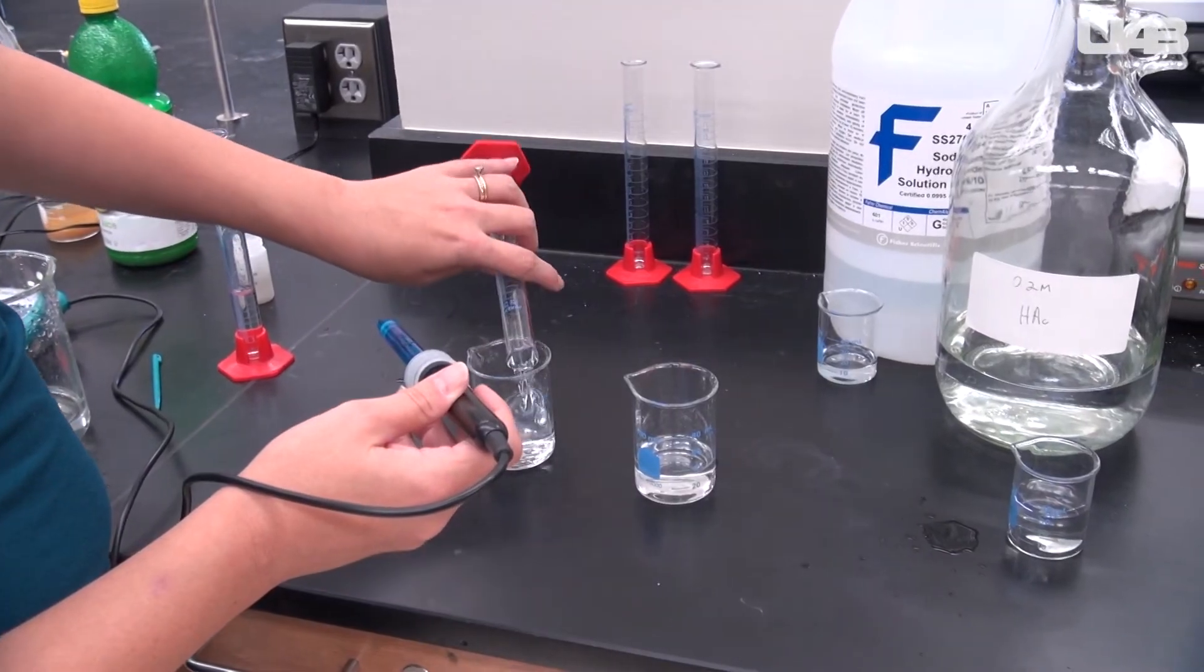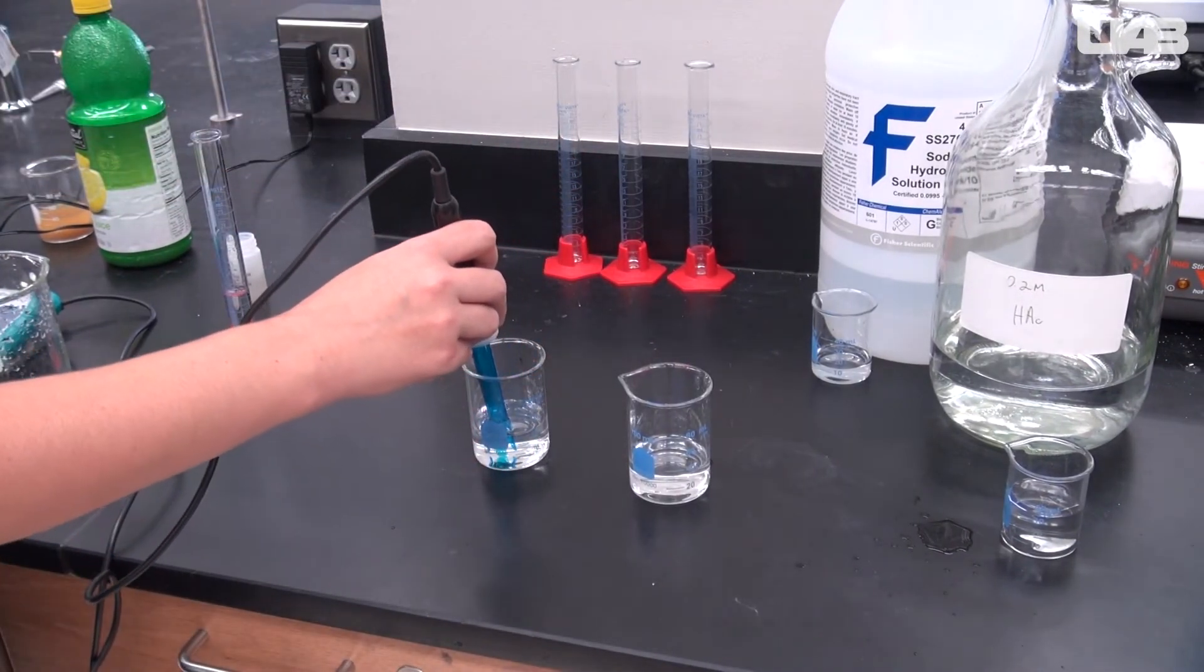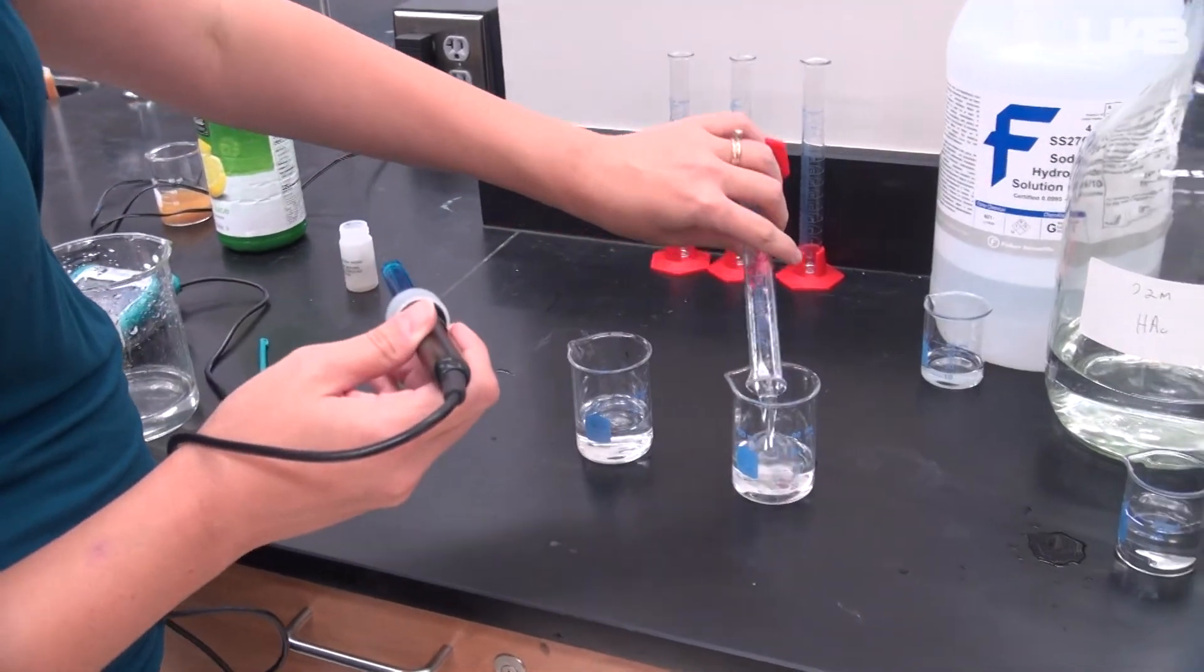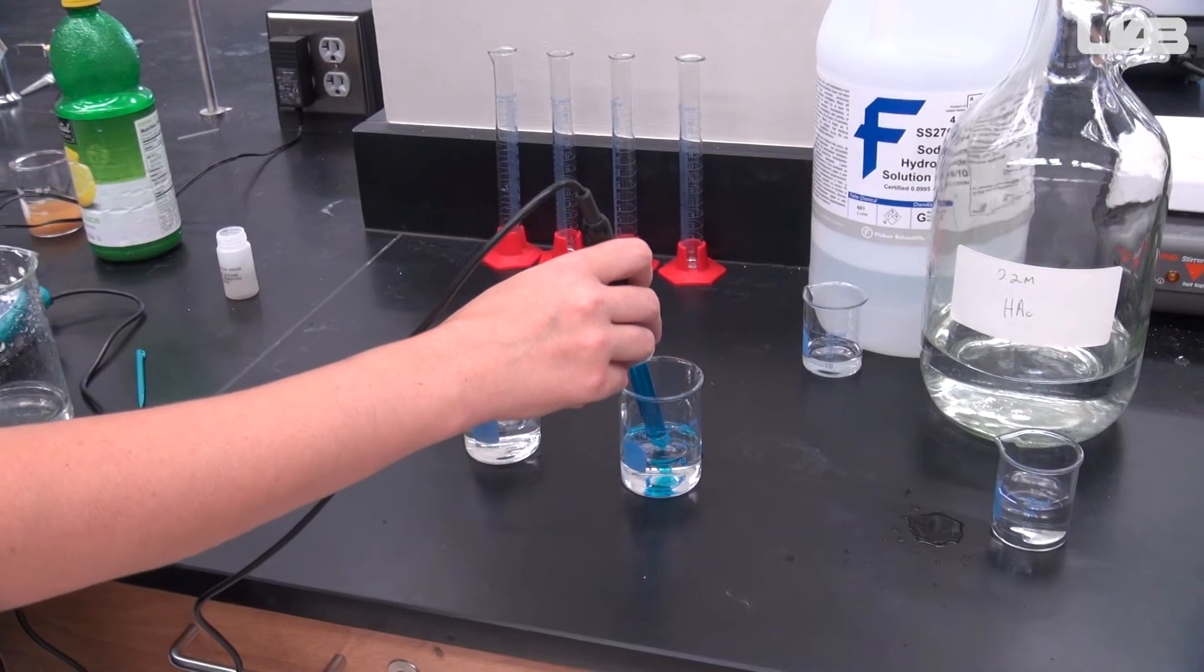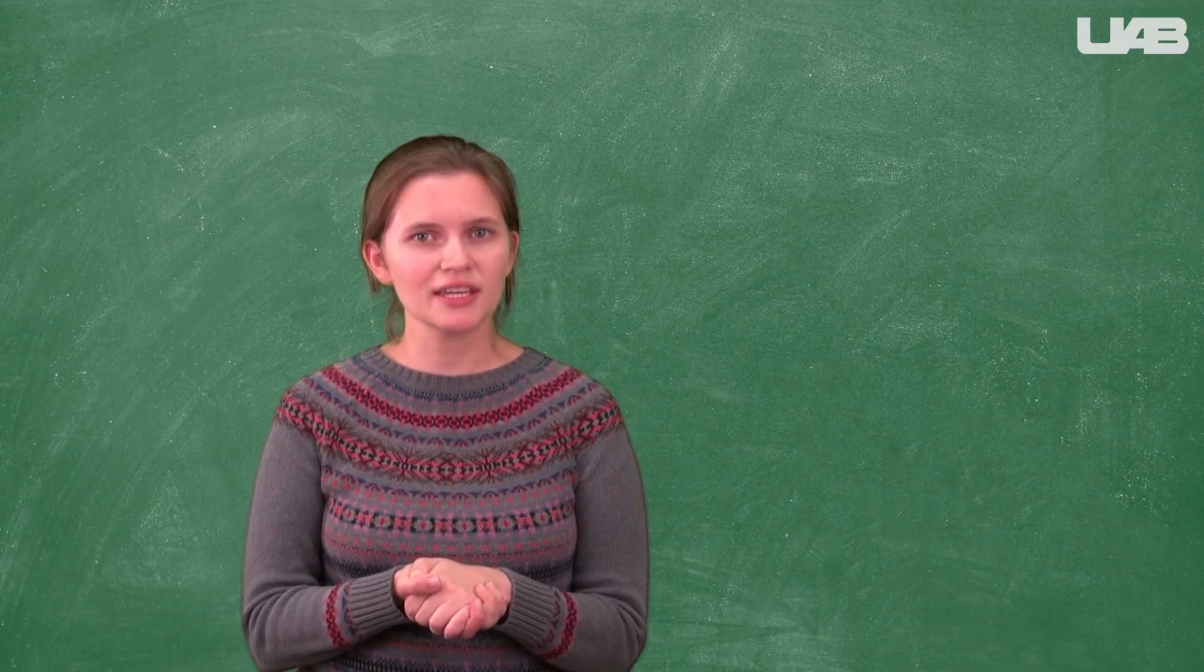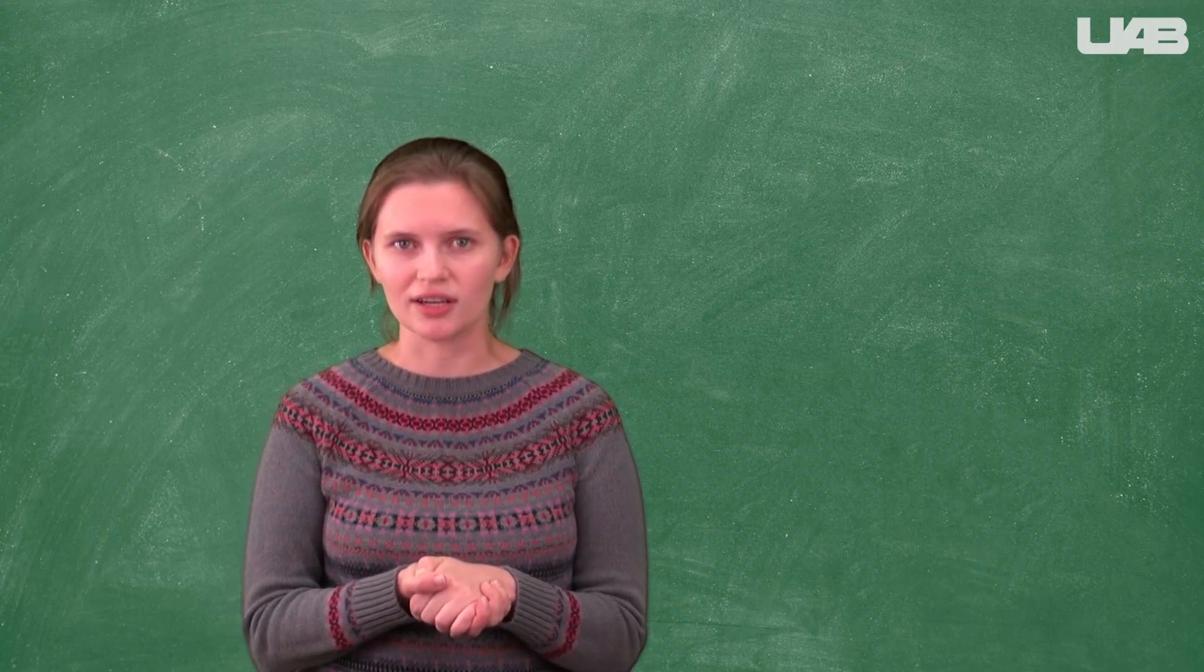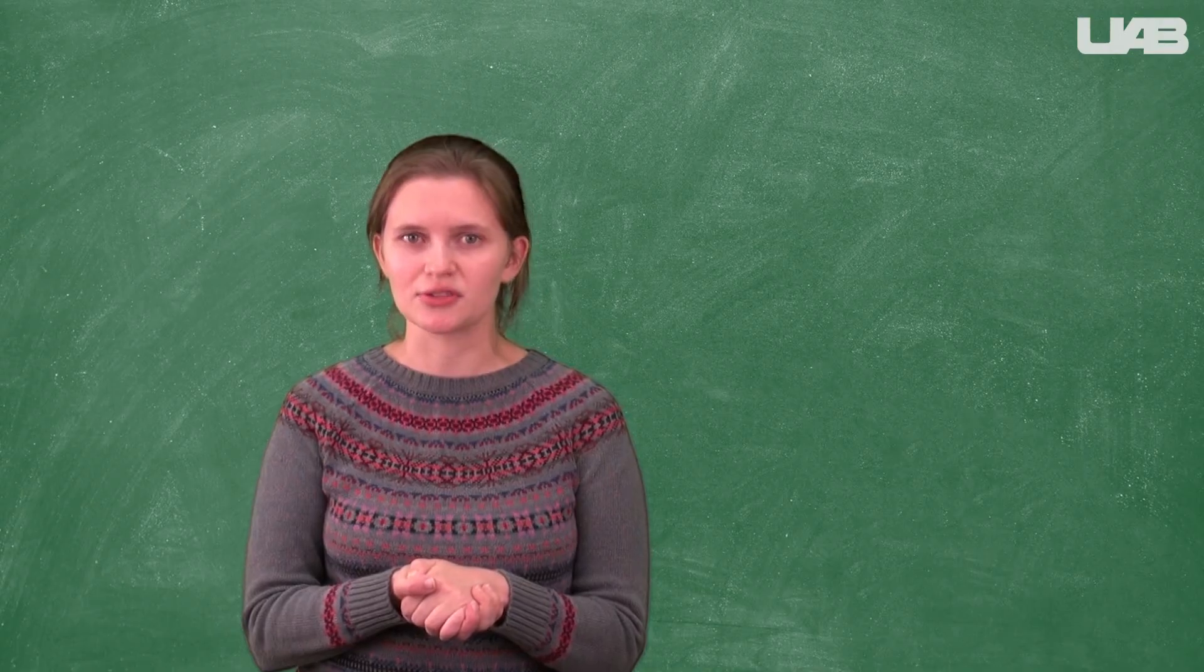Add 10 milliliters of 0.2 molar hydrochloric acid to the tap water and record the new pH. Add 10 milliliters of the 0.2 molar hydrochloric acid to the buffer solution, then record the pH again. You will compare the magnitude of the pH change when the hydrochloric acid was added to tap water to the pH change when hydrochloric acid was added to the buffer solution.